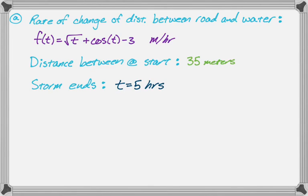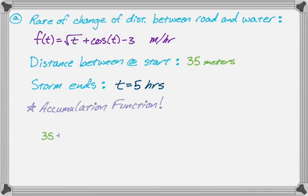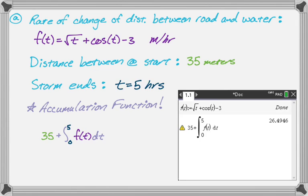The first question asks: what was the distance between the road and the edge of the water at the end of the storm? This feels like an accumulation function. So the answer is the amount it started at — 35 — plus the total change: the integral from zero to five of f of t dt. This is a calculator problem. I defined f of t, typed in that accumulation function, and got approximately 26.495 meters. That's the answer to part A — straightforward accumulation function.